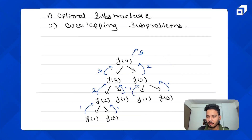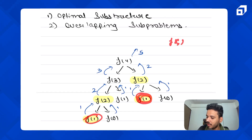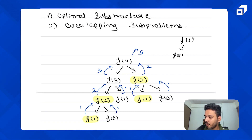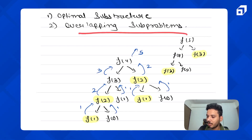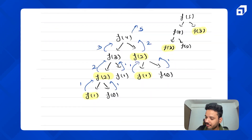We have the recursive code, but it's taking a lot of time because the same things are being calculated again and again. For example, the number of ways to reach two steps and one step are recalculated repeatedly. If this were f(5), f(3) would repeat multiple times — we have overlapping subproblems. Since the main problem depends on smaller problems following optimal substructure, we can apply memoization.